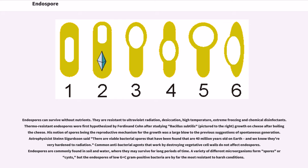Astrophysicist Steinn Sigurdsson said there are viable bacterial spores that have been found that are 40 million years old on Earth, and we know they're very hardened to radiation. Common antibacterial agents that work by destroying vegetative cell walls do not affect endospores. Endospores are commonly found in soil and water, where they may survive for long periods of time. A variety of different microorganisms form spores or cysts, but the endospores of low G+C gram-positive bacteria are by far the most resistant to harsh conditions.